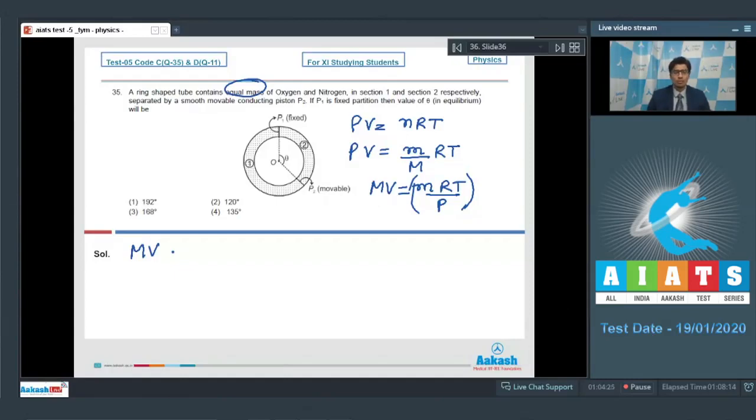Now, dear students, here the volume will be proportional to the theta that is the angle subtended by the gas at the center of the circular arc. Therefore, we can write that 32 into 360 minus theta would be equal to 28 into theta because 32 is the molar mass of oxygen and 28 is the molar mass of nitrogen. On solving the value of theta, we can find out it to be equal to 192 degrees, which means option number 1 is the correct answer.